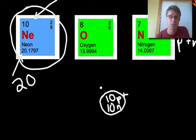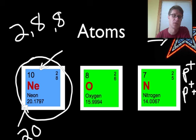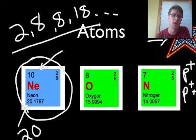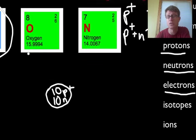Now let's figure out the number of electrons. There's something you should remember — and that is 2, 8, 8, and 18. It keeps going like this, but for now let's just remember that: 2, 8, 8, and 18. In other words, the electrons always go in specific energy levels.